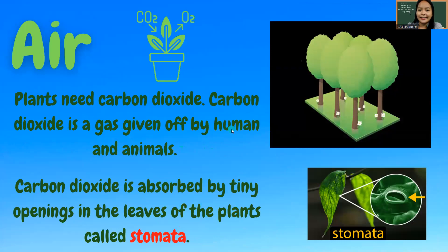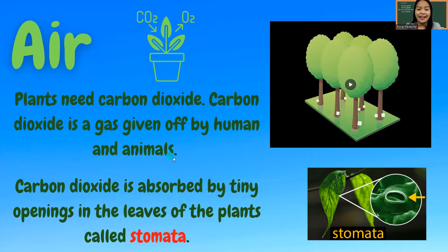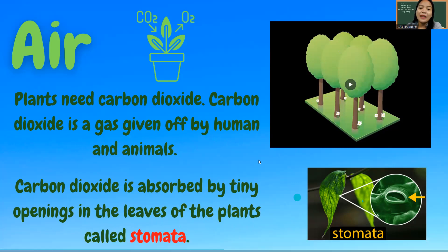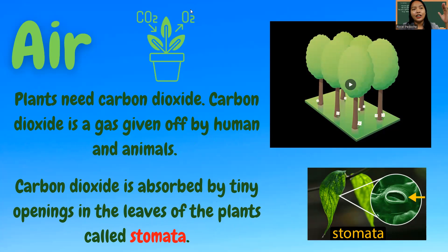Now let's go to the next one — we have air. Plants need carbon dioxide. Carbon dioxide is a gas given off by humans and animals. It is absorbed by the leaves of the plants through structures called stomata. Plants need carbon dioxide — CO2 — and in return, plants give off oxygen, the fresh air that humans and animals need. Meanwhile, plants absorb carbon dioxide, which is needed in making their food.